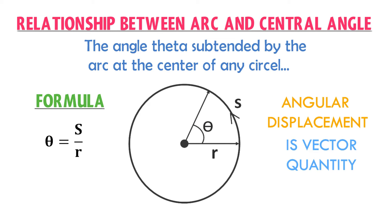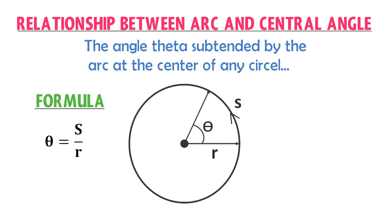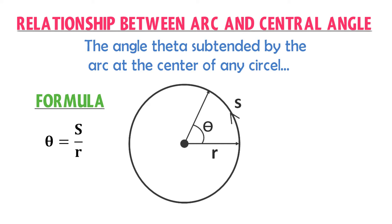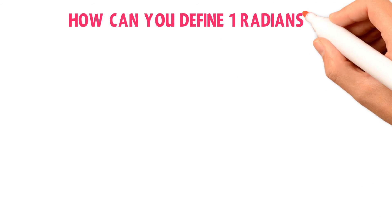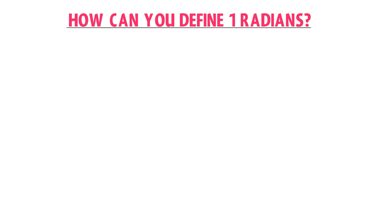Remember that theta — the angular displacement — is measured in radians. Angular displacement is a vector quantity. The SI unit of angular displacement theta is radian. So, how can you define 1 radian angular displacement for an object?